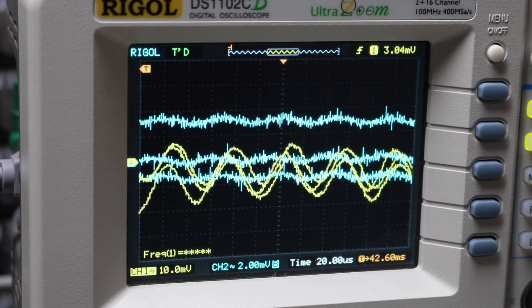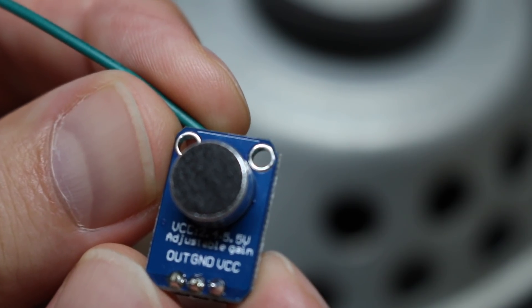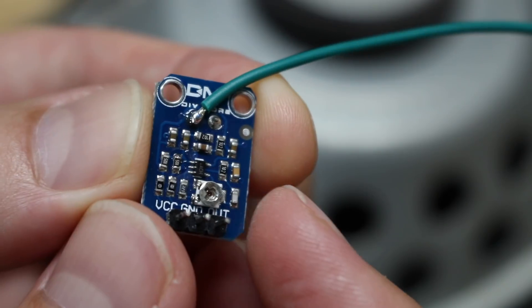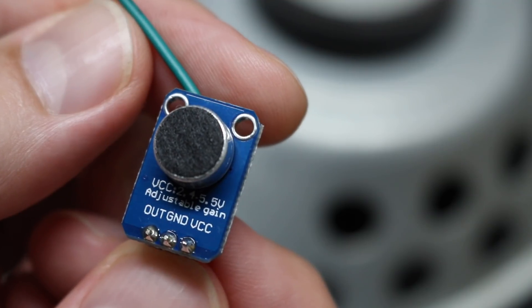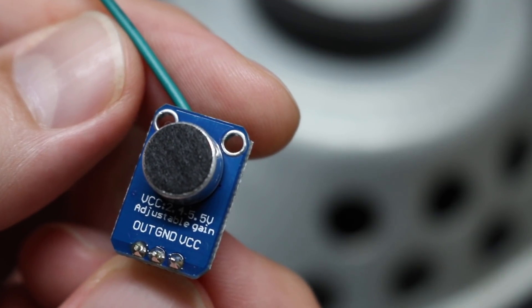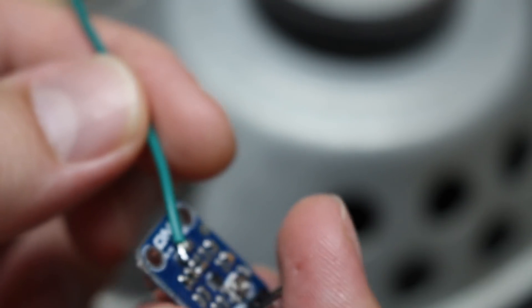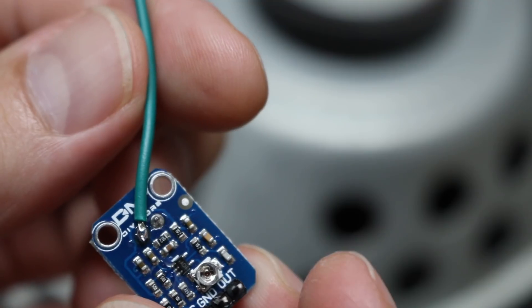I would call this a success. So that's not a bad little electret microphone module. You can adjust the gain here if you need to do different things. And it seems to work over the 20 hertz to 20 kilohertz band. So good deal. Now I should go take this unnecessary wire off before I short something out.